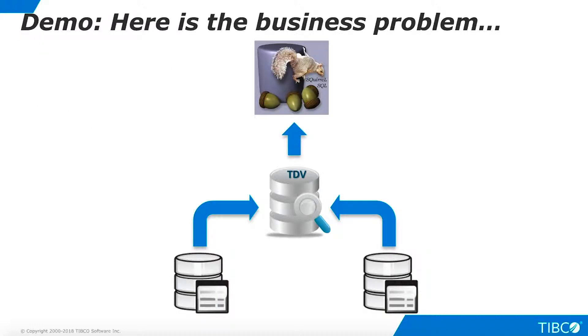Next, let's walk through a very basic demo of JDBC connectivity to TDV. Here is the business problem that we illustrate in this demo. We have created a TDV federated view from underlying physical data sources. A business analyst wants to consume this view into a data visualization tool. For this demoette, we use Squirrel, a freeware SQL tool. We will use JDBC to enable Squirrel to connect to TDV. Other client products may have their own installation instructions, but in general they will follow the steps we outline here with Squirrel.